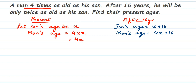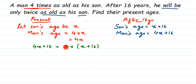The condition given for after 16 years is: he will be only twice as old as his son. Before it was four times, now it becomes two times — twice means double. So we get the relationship: the man's age 4x + 16 will be twice the son's age, which is 2 into (x + 16).